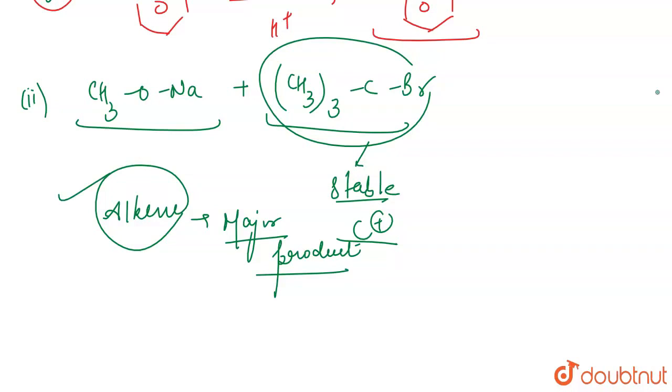Symmetrical disubstituted ethers with tertiary groups are very rare. With tertiary alkyl halides, alkene is formed as a major product.